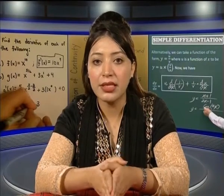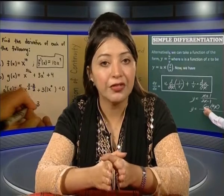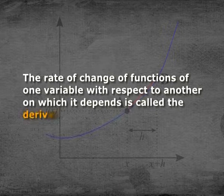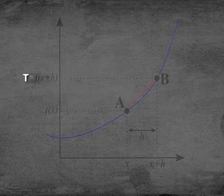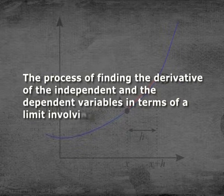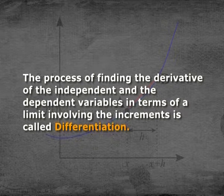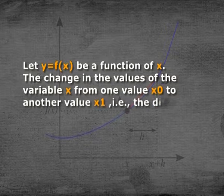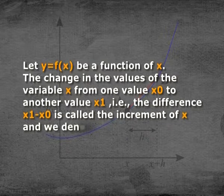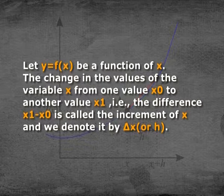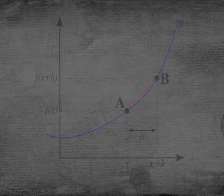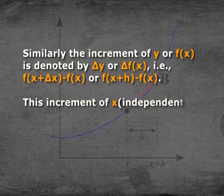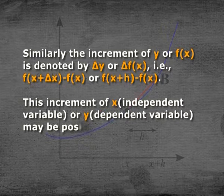We know that all expressions like kilometer per hour, price per area, etc., for functions represent rates. The rate of change of functions of one variable with respect to another on which it depends is called the derivative of the function. The process of finding the derivative of the independent and dependent variables in terms of a limit involving the increment is called differentiation. Let y = f(x) be a function of x. The change in x from x₀ to x₁, that is x₁ − x₀, is called the increment of x and we denote it by Δx or h.